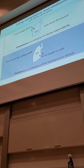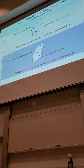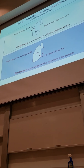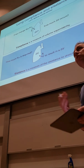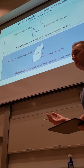And elastance is a slight variation on this question. Instead, we're asking how much transpulmonary pressure do we have to have to get a certain change in volume.